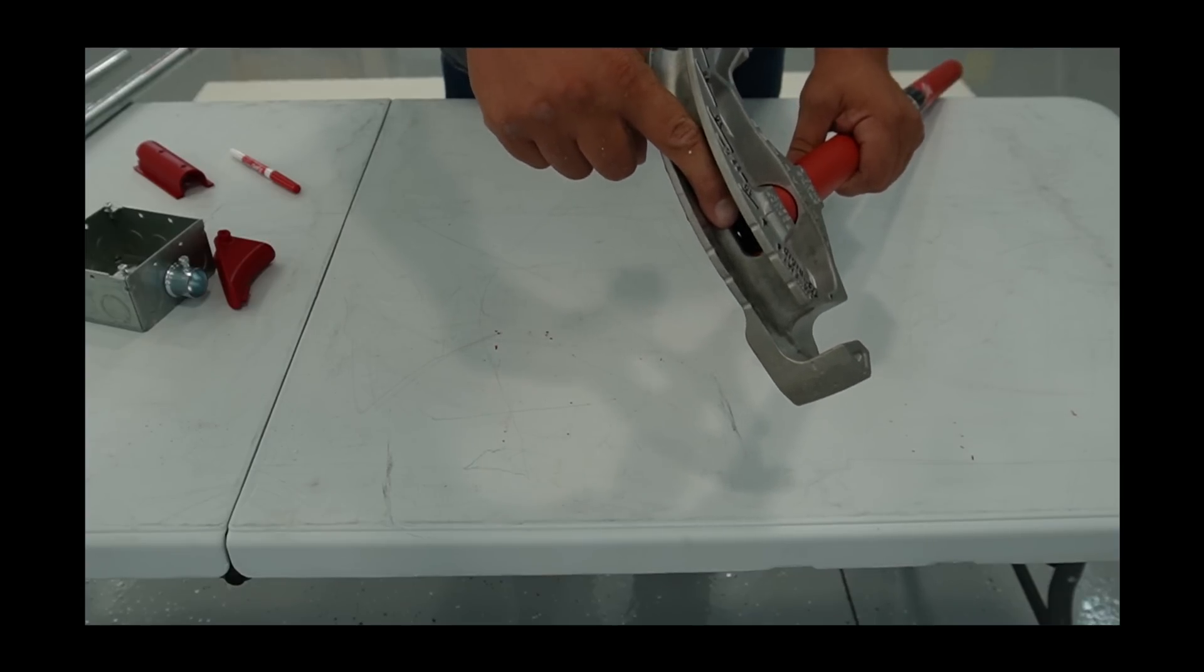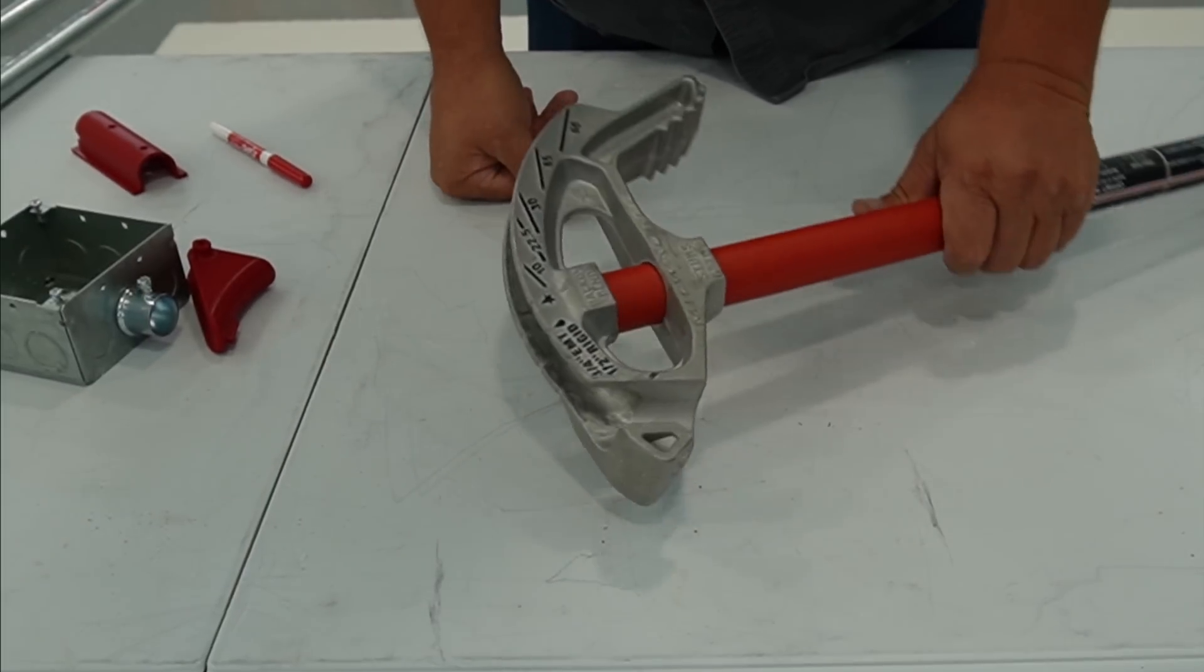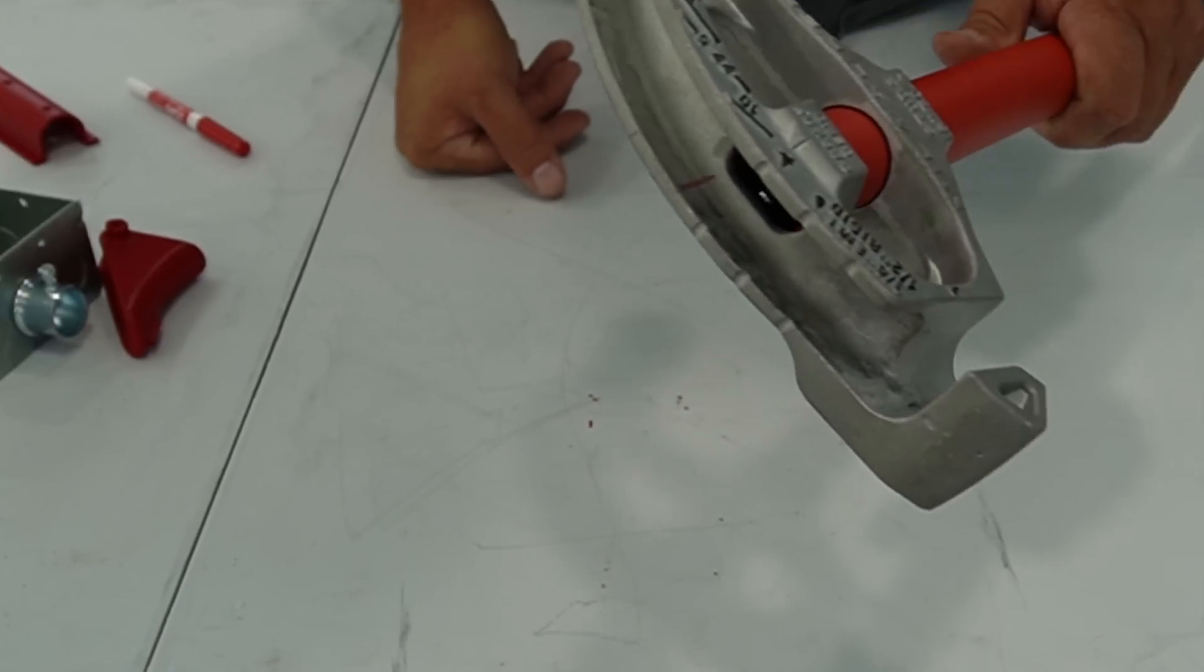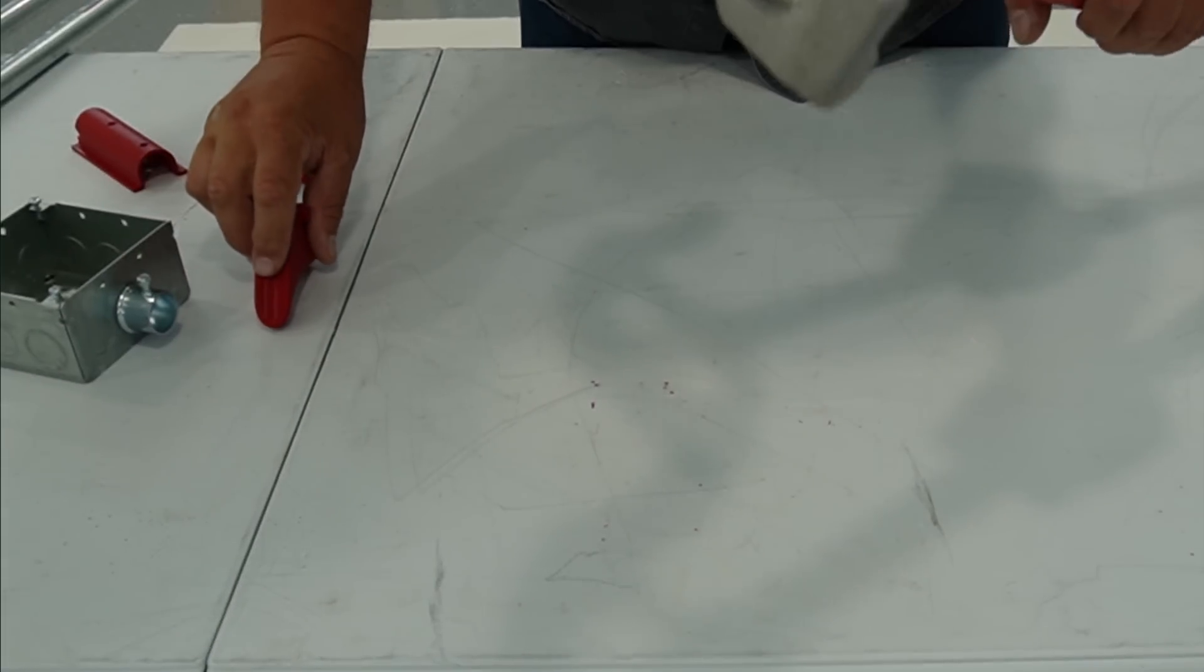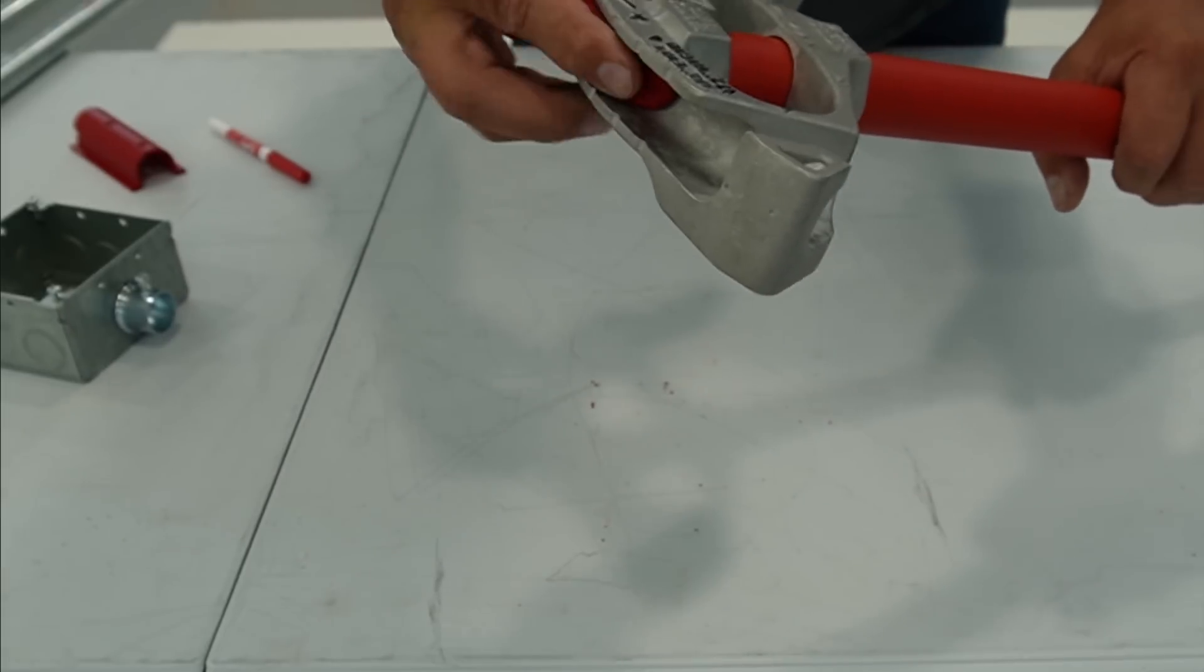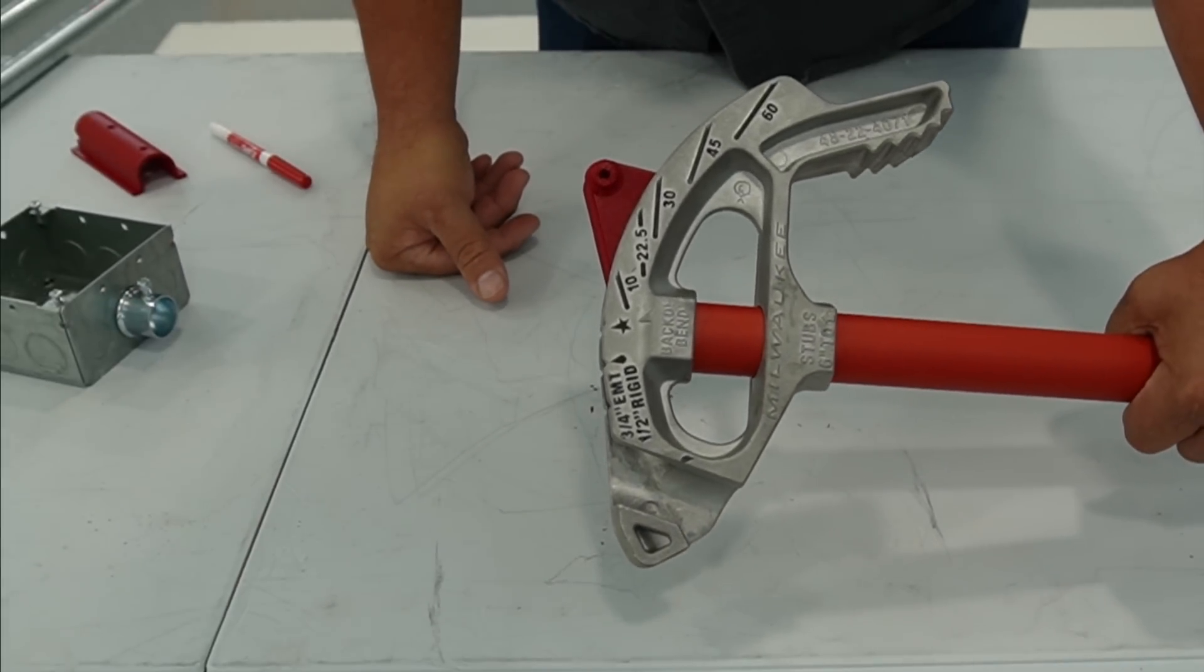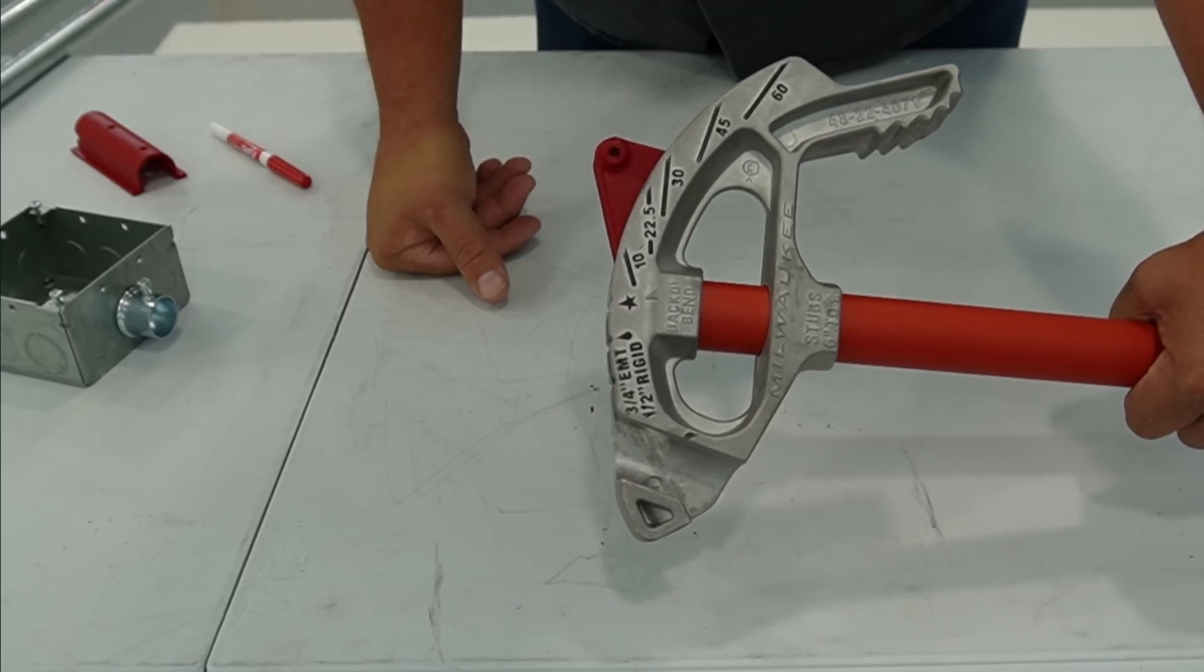Here is the hole in the end of the bender that the fixture is going to pop into. And you can see how it aligns with the 10 degree line.